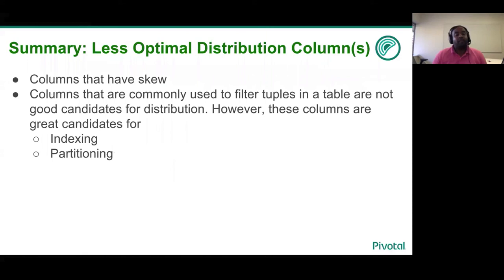Less optimal distribution policy. Any column that has a skew, like for instance, line number in the line items table, that is a poor distribution policy. If you choose such columns, then most of your tuples will land up on a few handful of segments, and you will not maximize parallelism.